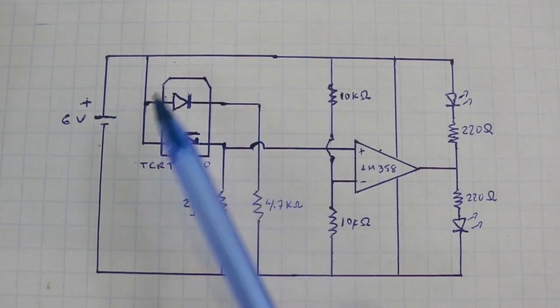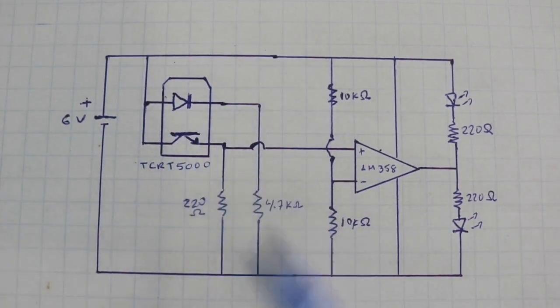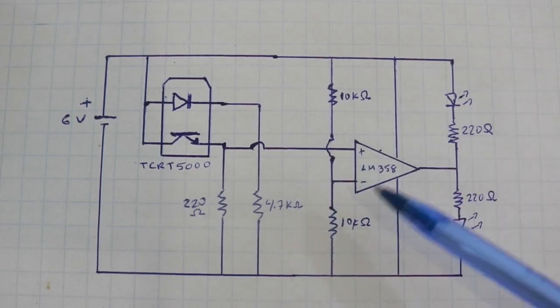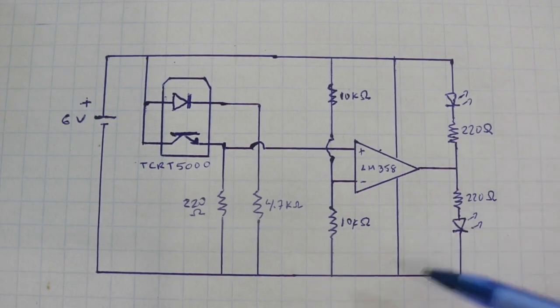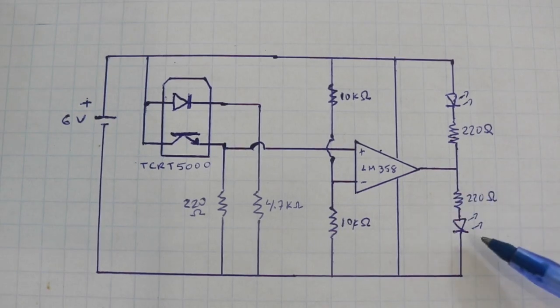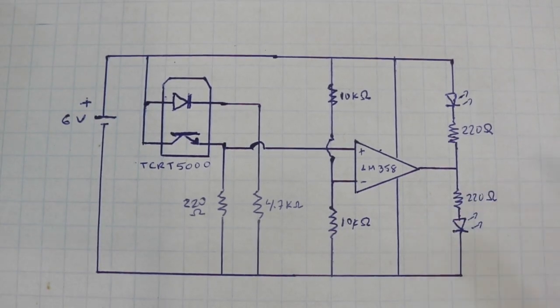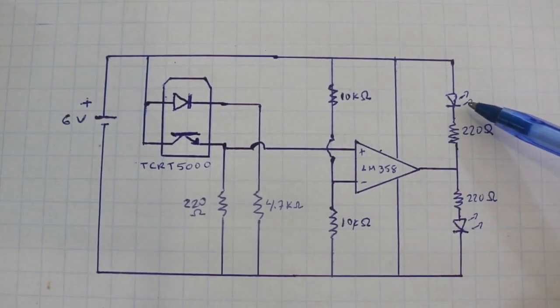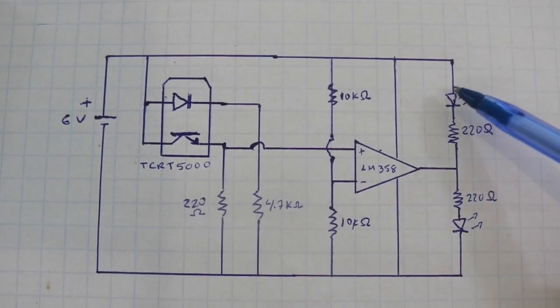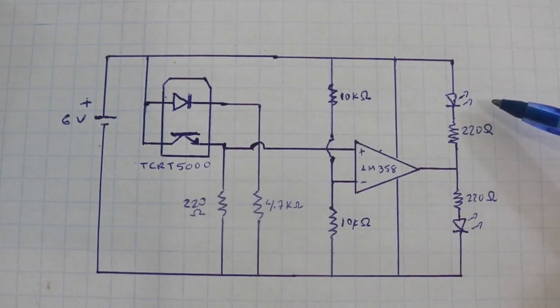And if the sensor is not emitting a signal, here we will have 0 volts and here 3. Therefore, at the output we will have 0 volts. This LED which is the red one is off and this other LED is at potential of 6 volts and will be on. It is the green one.